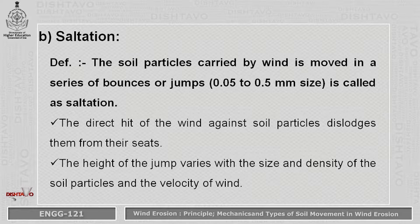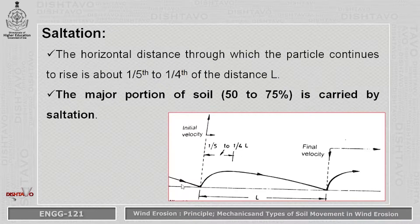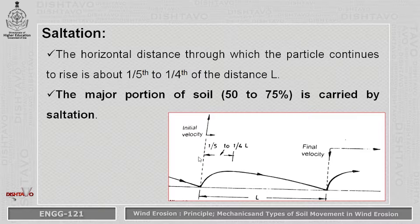The second initiation phase is saltation. Soil particles carried by wind move in a series of bounces or jumps. The size of particles moved by saltation ranges from 0.05 mm to 0.5 mm. The direct force of wind against soil particles dislodges them from their positions and they are carried in a series of bounces or jumps, as shown in the photographs. The horizontal height to which the particle rises is about 1/5th to 1/4th of the horizontal distance L. The major portion of soil is transported by saltation — around 50 to 75 percent.